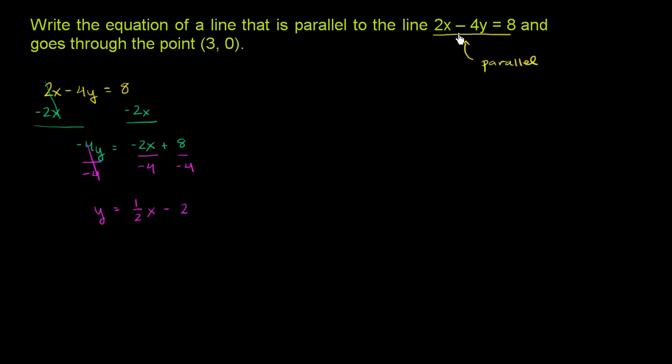So we just rewrote this line over here. But because we wrote it in mx plus b form, we now know its slope. The slope of this line is 1 half. That right there is the slope. So the equation of the line that we care about is going to have the same slope.